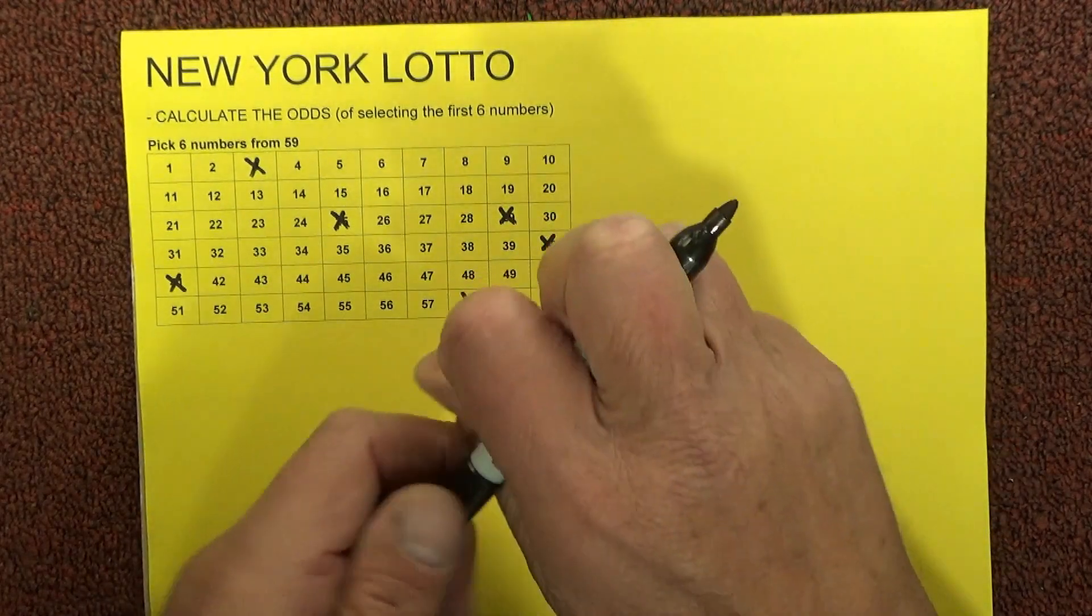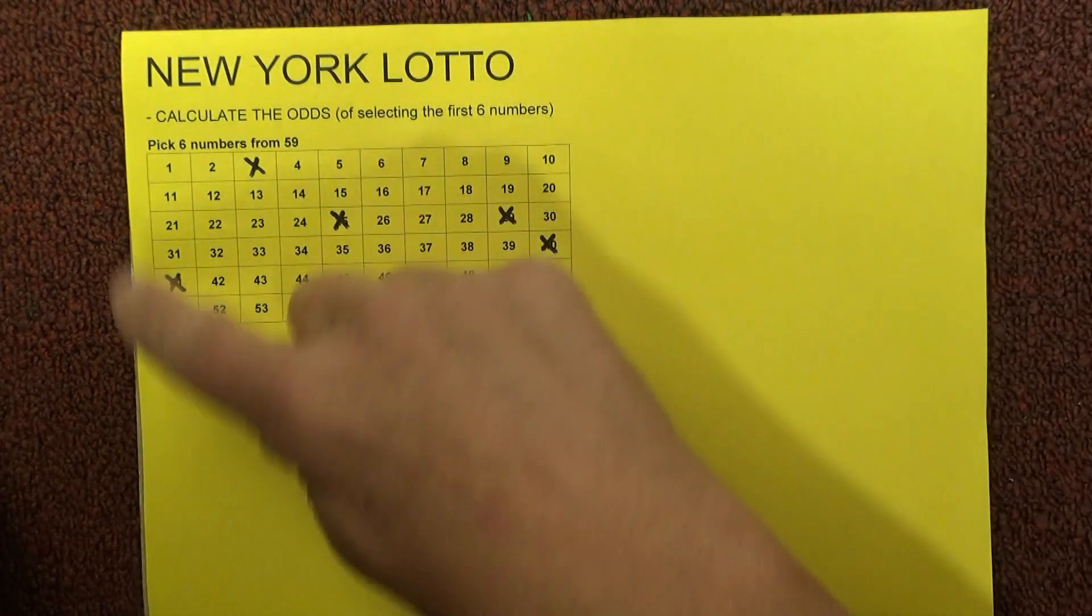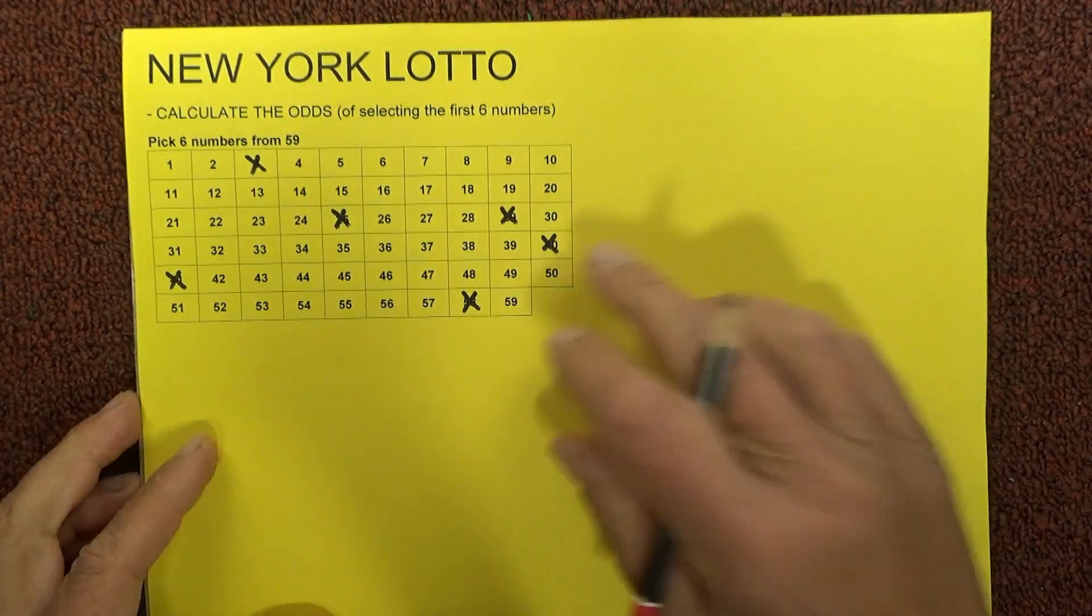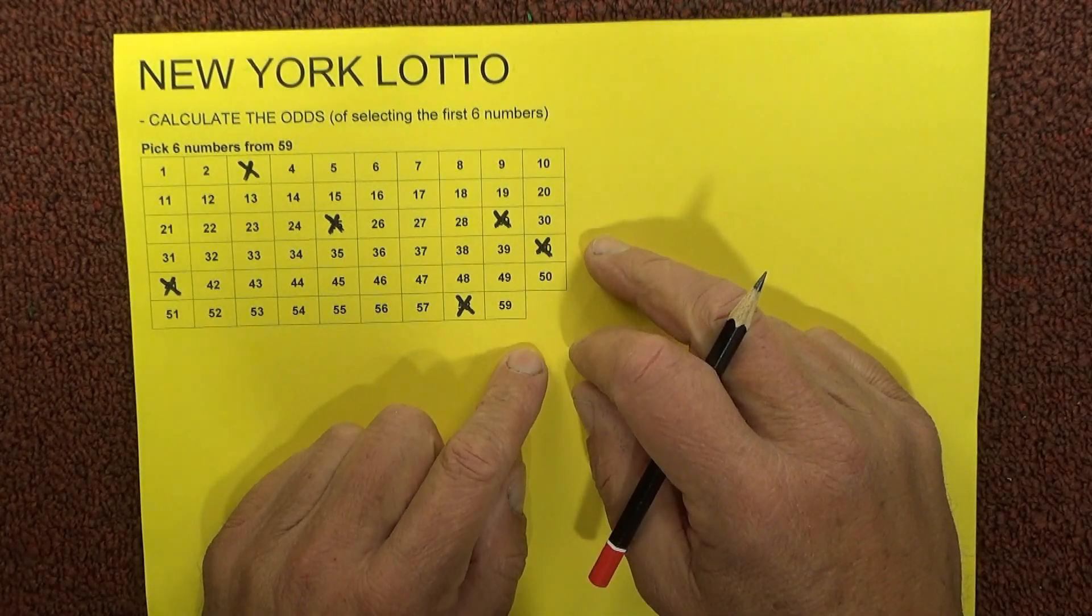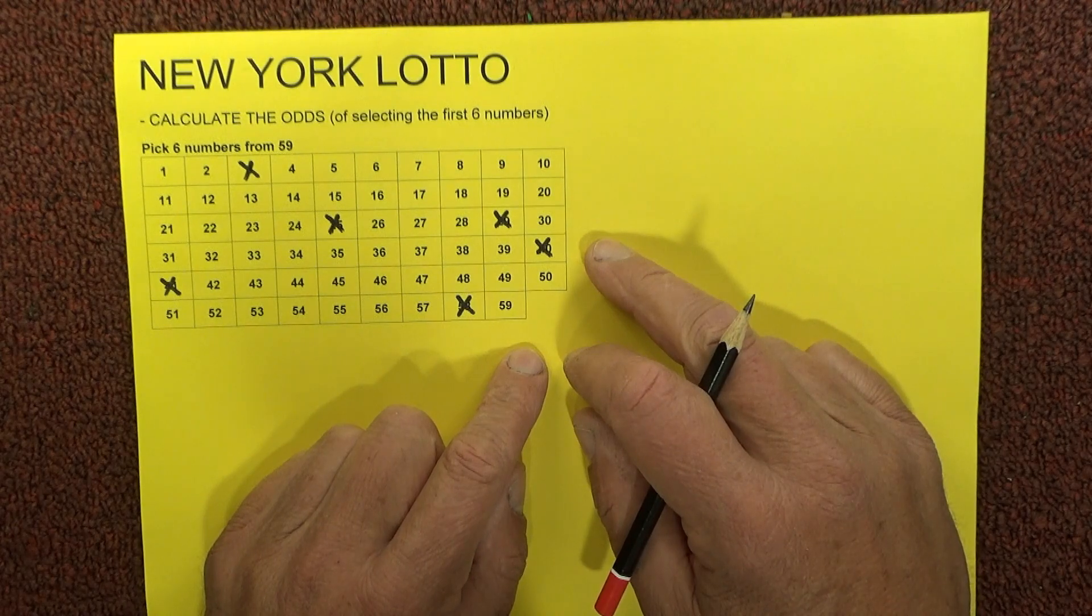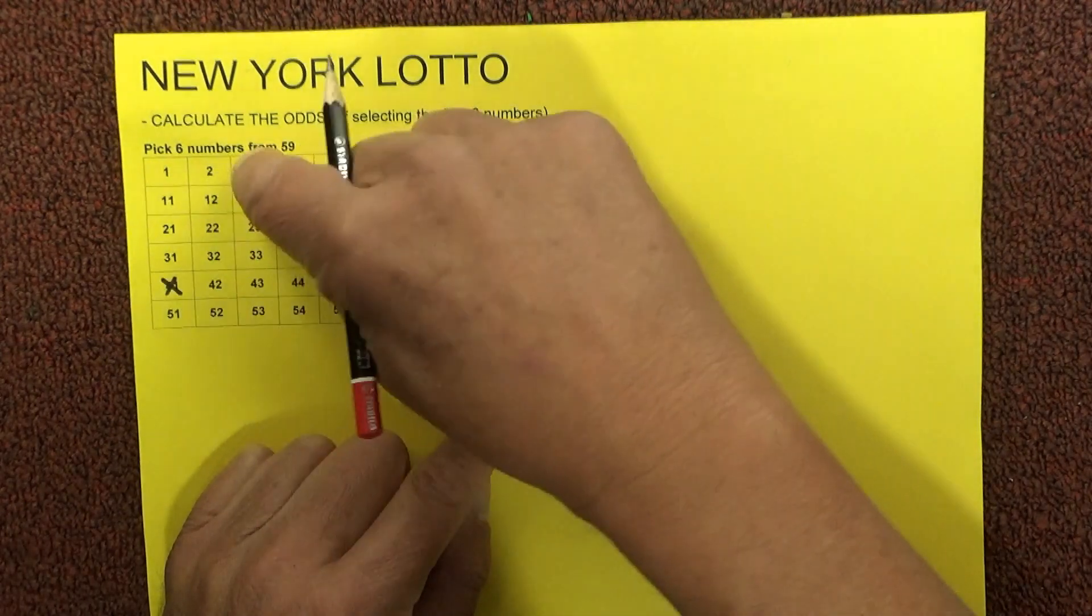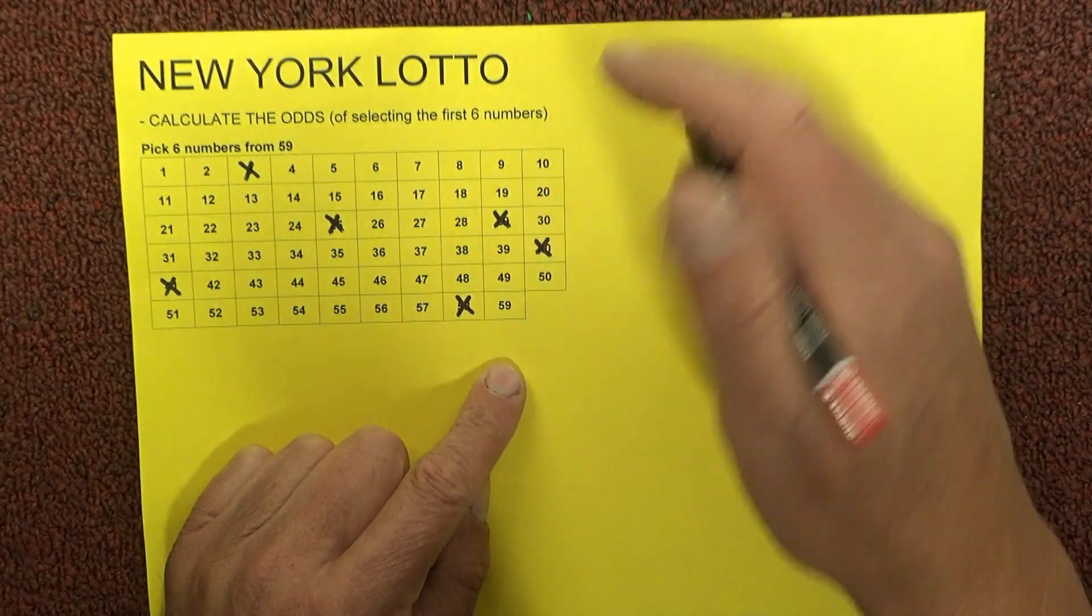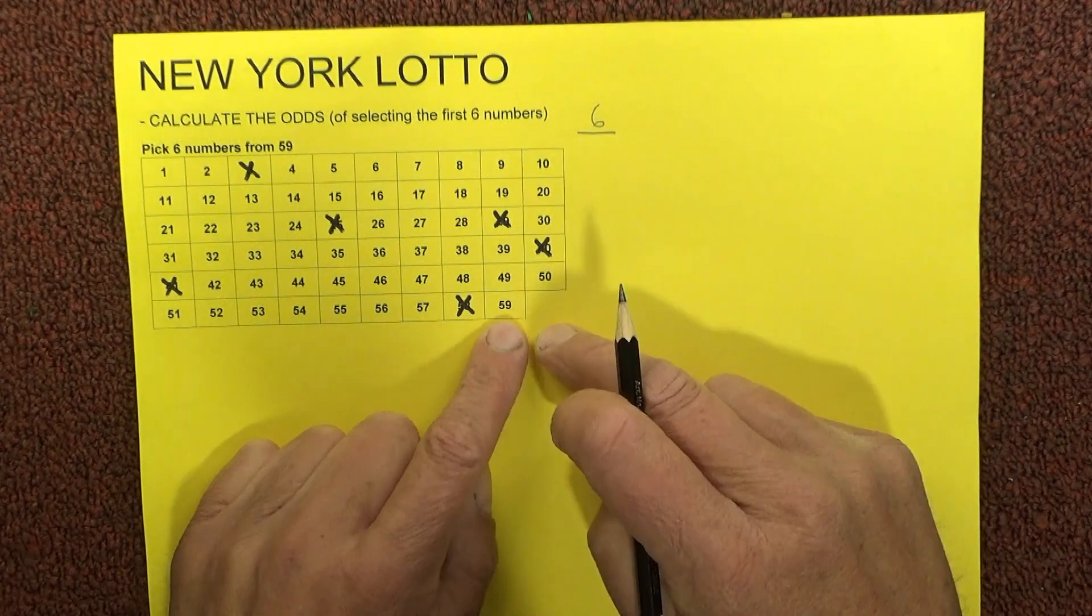If you could imagine then, these are the six numbers on just one coupon. If you're sitting there watching the draw, when the first ball is drawn, you've actually got six chances.